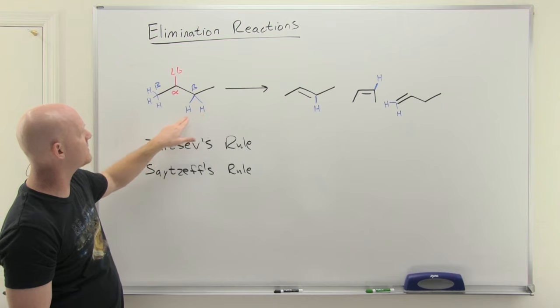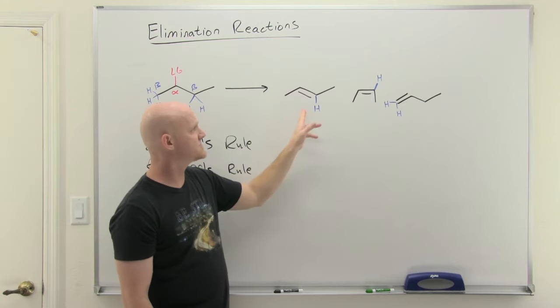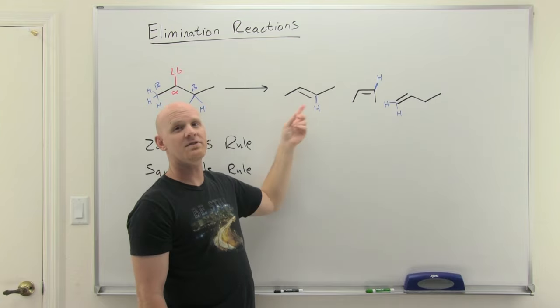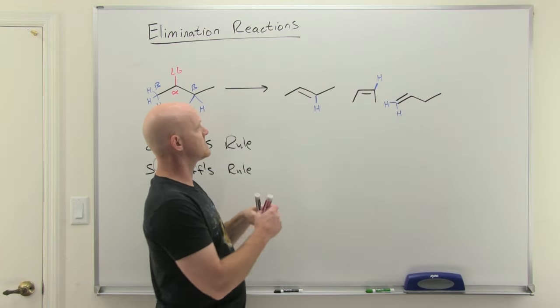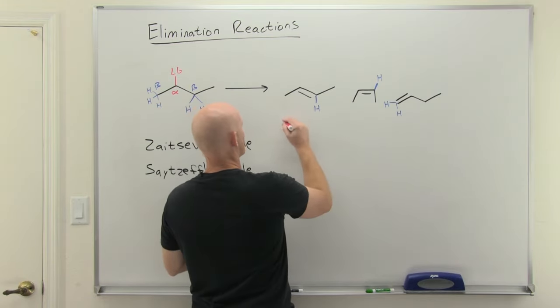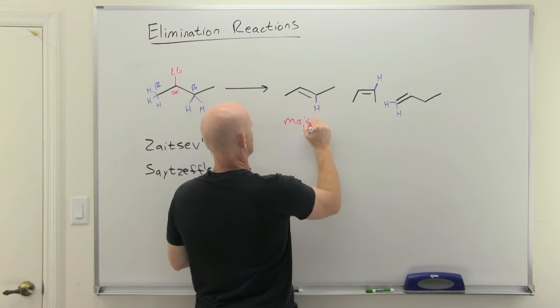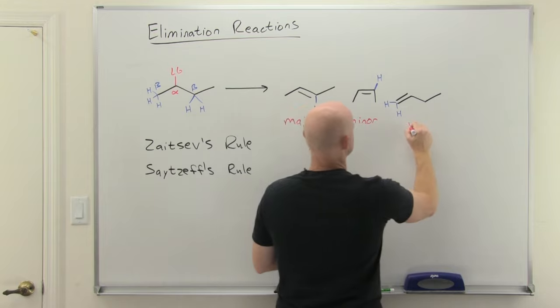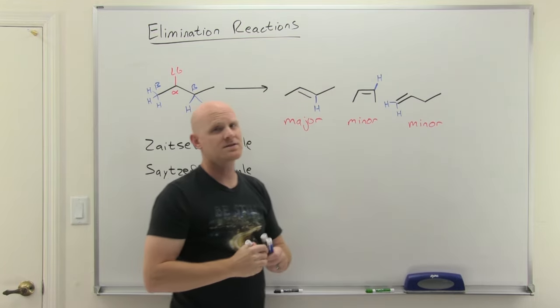If we look, if we choose this beta carbon on the right, it turns out there's two different alkene products we can get, one trans and one cis, and the trans being more stable. This is going to be our major product. This would be one of the minor products. And then this guy over here we'll learn is also one of the minor products.